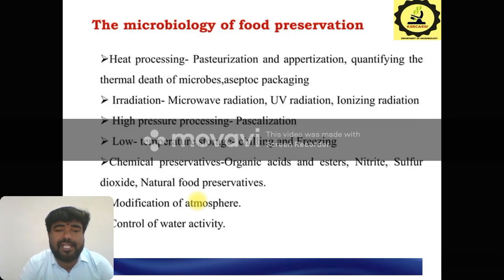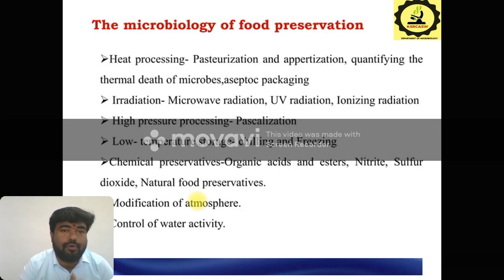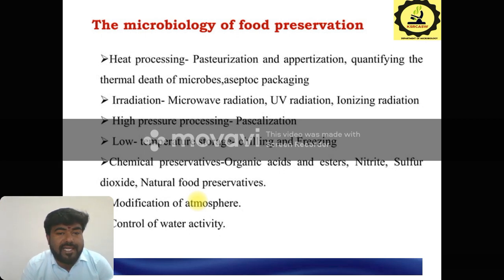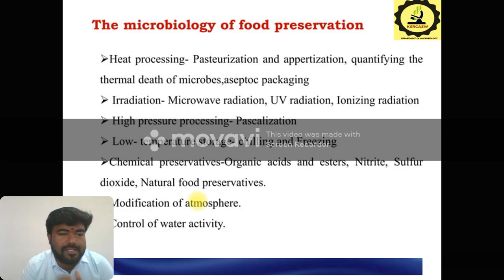The microbiology of food preservation — what are the different methods you can apply for food preservation? Especially heat processing; it is the basic process. Especially the appreciation and quantifying the thermal death of microbes — you can identify the thermal death point of microorganisms. Then aseptic packaging; the packaging process is important for the food industry, applying specific temperatures. Then irradiation, then high pressure processing, especially sterilization.